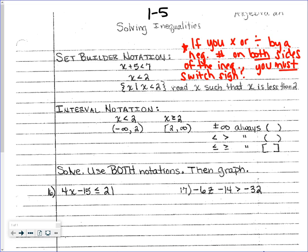For interval notation — x is less than two. When graphing, I put two in the middle with one on the left and three on the right. Since it's strictly less than, that's an open circle. Since x is less than two, I shade left — one is less than two, so I go left. You should already know the graphing part, but the interval notation is probably new.